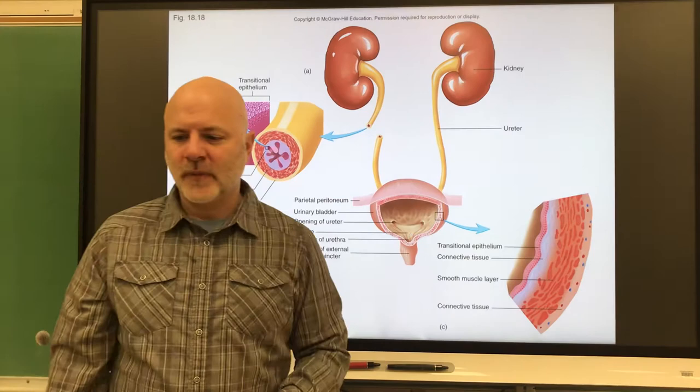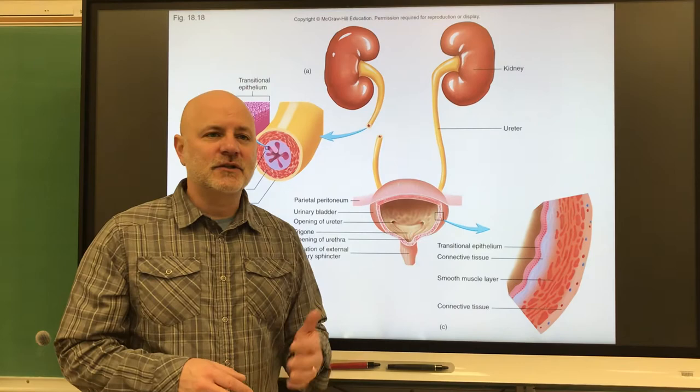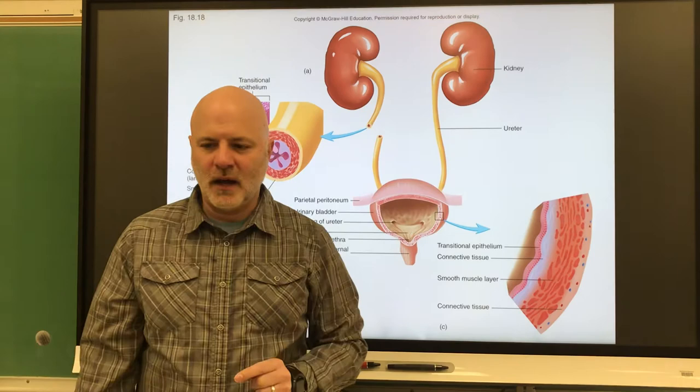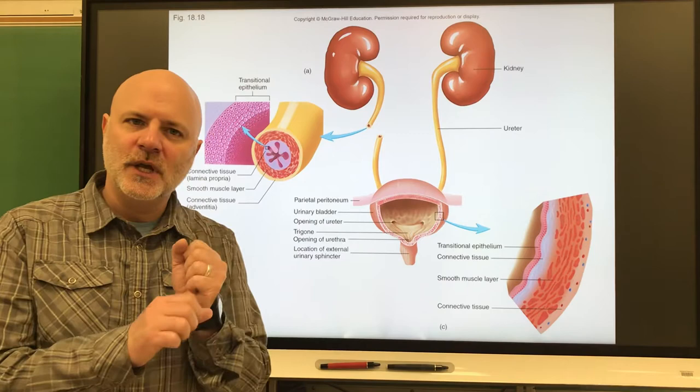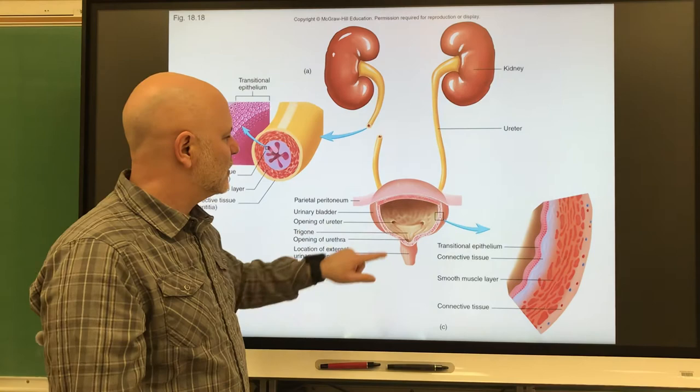So let's take a look at those ureters. A ureter is a tubular organ that transports urine from the kidneys to the urinary bladder. So here's a kidney, there's a ureter, taking it to that urinary bladder. And peristaltic contractions are going to move that urine. So that's where we squeeze behind the urine, getting it down those tubes. Now at the ends of the ureters are valves that prevent the backflow of urine into the ureters.